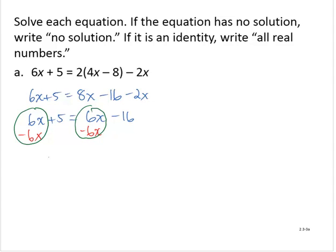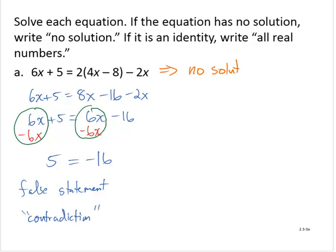6x minus 6x is 0. And 6x minus 6x on the right hand side is also 0. And so we now have the statement that 5 is equal to negative 16. So this is a false statement or sometimes also known as a contradiction. This is a statement that is never true. 5 is never equal to negative 16. And so when we have this type of situation occur when we are attempting to solve an equation, what that tells us is this equation has no solution. There is no value of x that I can substitute and yield a true statement.